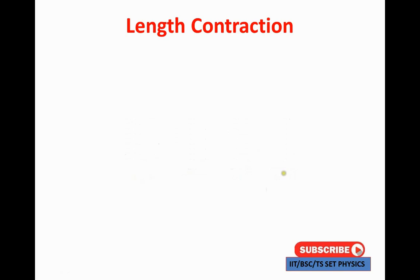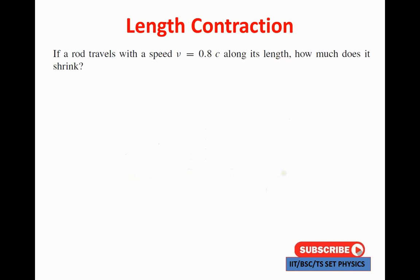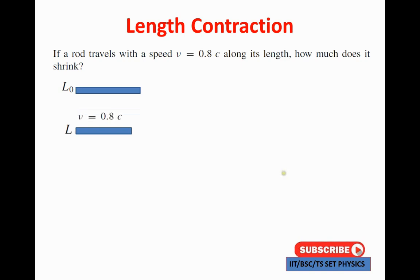Length contraction problems. Problem one: if a rod travels with speed v equal to 0.8c along its length, how much does it contract? The rest length of the rod is L-naught, the moving rod length is L, and the speed is v equal to 0.8c.